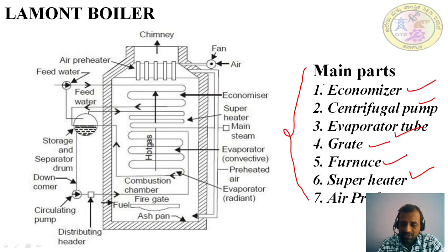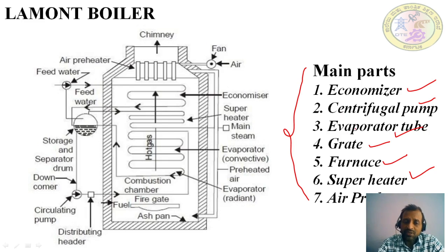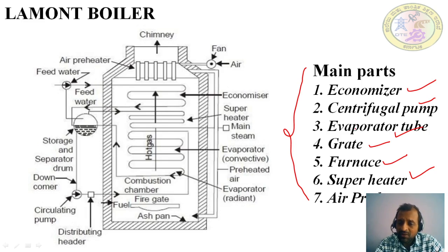The economizer is used to increase the efficiency of the boiler. The centrifugal pump is used to send water inside the boiler at high pressure. The evaporator tube is the tube in which evaporation of water takes place. The grate is the platform where you burn the fuel. The furnace is the vertical enclosure where the total arrangement of these components is housed.